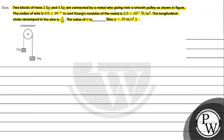We can use the value of g as 10 m/s². The key concept here is elastic modulus — specifically Young's modulus of elasticity. Young's modulus is the ratio of longitudinal stress to longitudinal strain. In formula terms, we write it as Y = (T/A) / (ΔL/L), where ΔL is the change in length and L is the original length. We will use this expression for the question.